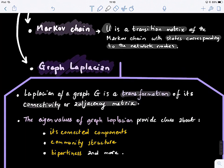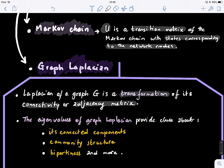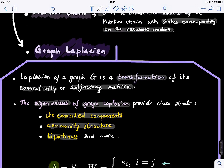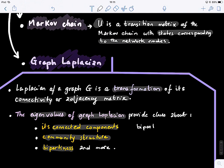The eigenvalues of the graph Laplacian provide clues about its connected components — we can know how many connected components a graph has by analyzing the eigenvalues of its Laplacian matrix. They also reveal community structures: in one of the next lectures, we'll look at algorithms to detect communities or modules within a graph. Additionally, the Laplacian reveals bipartiteness. A bipartite graph is one where we can split the nodes into two independent sets such that there is no connection between nodes within each set.